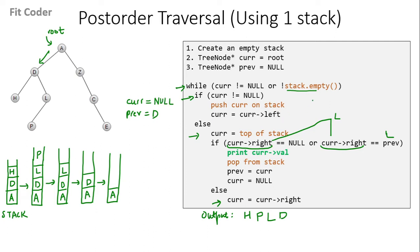In the next iteration, stack is not empty, so we come in the else part. `Current` becomes equal to top of stack, which is A. Right of A is Z, and `previous` is D, so this if condition is false. We come in the else part, and `current` becomes equal to right of A, which is Z. In the next iteration, `current` is not equal to null, so we push `current` on the stack, and `current` becomes equal to left of Z, which is null.